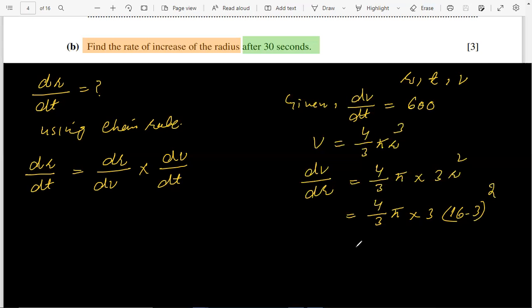So it will be 3338.76. Now just putting the value of radius from part A, 16.3 squared, so it will be 3338.76.